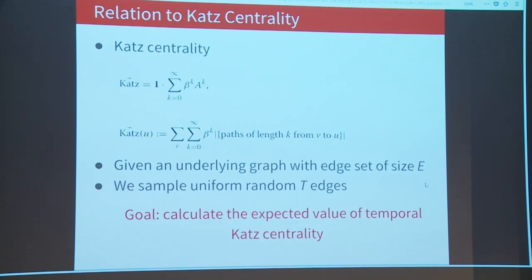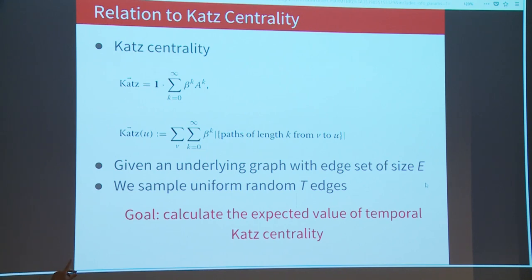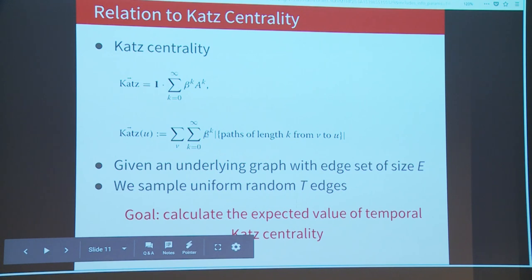I will now show the relation of our centrality metric to the original static Katz centrality. Static Katz centrality is a weighted sum of all walks ending at a single node u, penalized by walk length. I will show that for a specific setting, our temporal Katz centrality converges to a formula very similar to static Katz centrality.